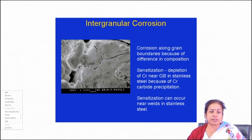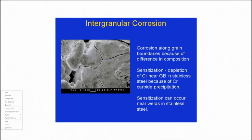Usually the corrosion rate or attack rate of grain boundaries is much higher than that of the grains. In pure metal, the area fraction or volume fraction of grain boundaries is much smaller than that of grains, so it does not have a significant effect on the overall corrosion rate of the component.